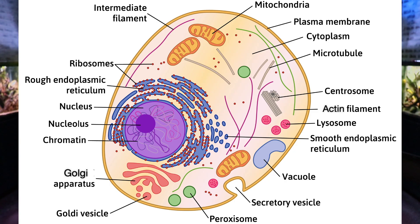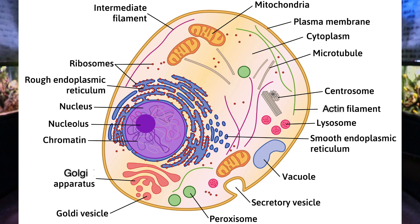The Golgi apparatus is also part of the endomembrane system. It packages proteins — meaning proteins manufactured in the rough ER travel to the Golgi, which ensures their proper three-dimensional structure, including tertiary or quaternary folding. The Golgi then packages these proteins into vesicles and vacuoles, which allow the proteins to either be embedded in the membrane or secreted from the cell.